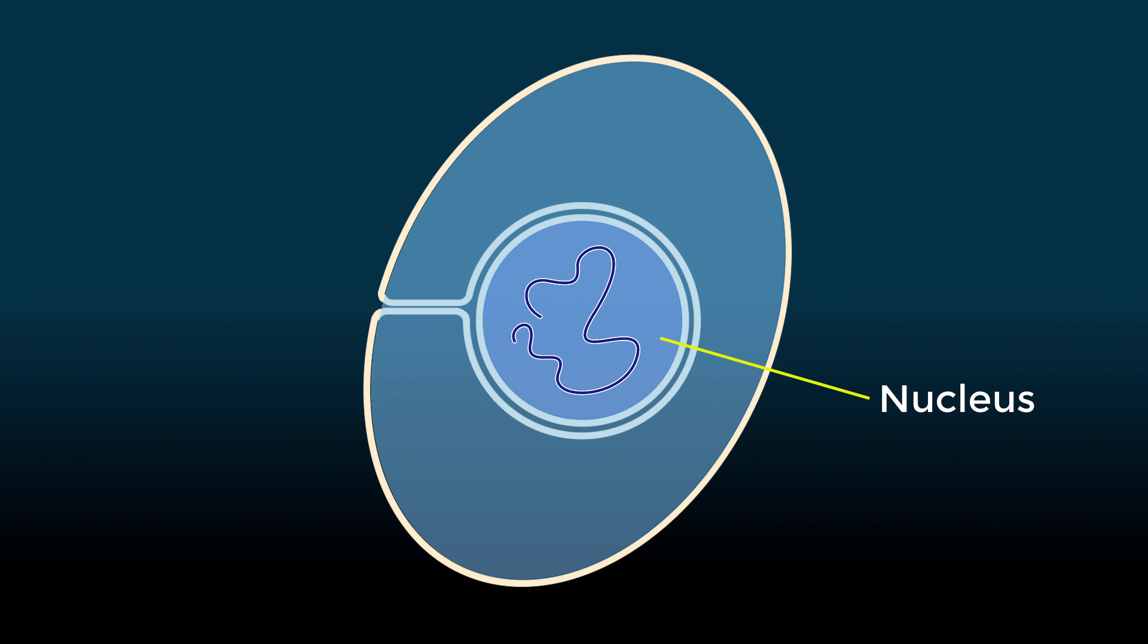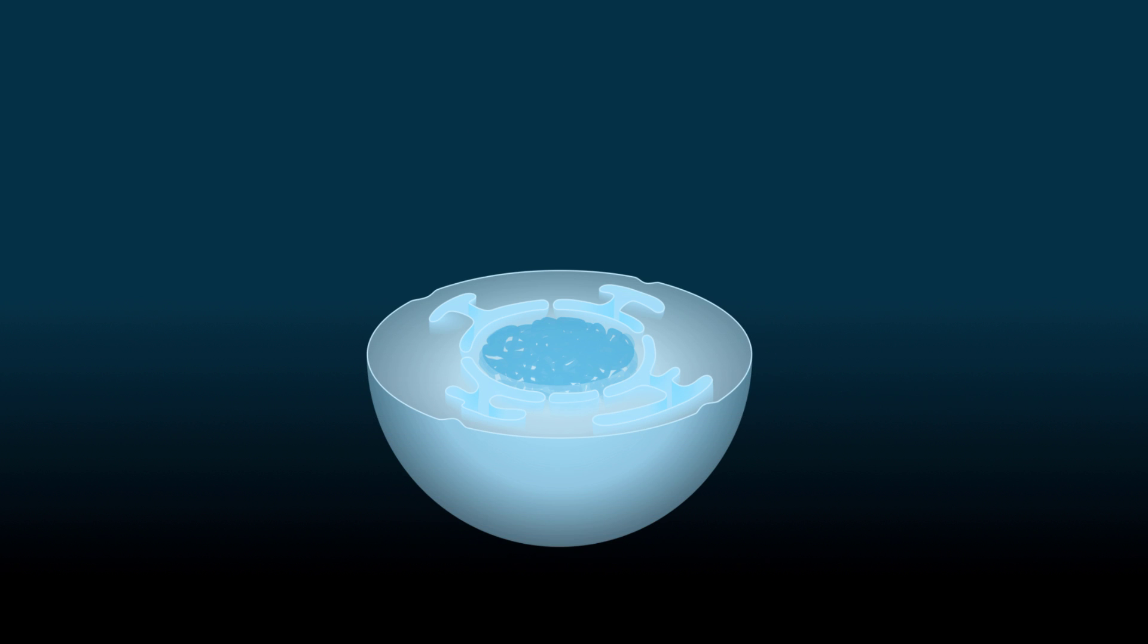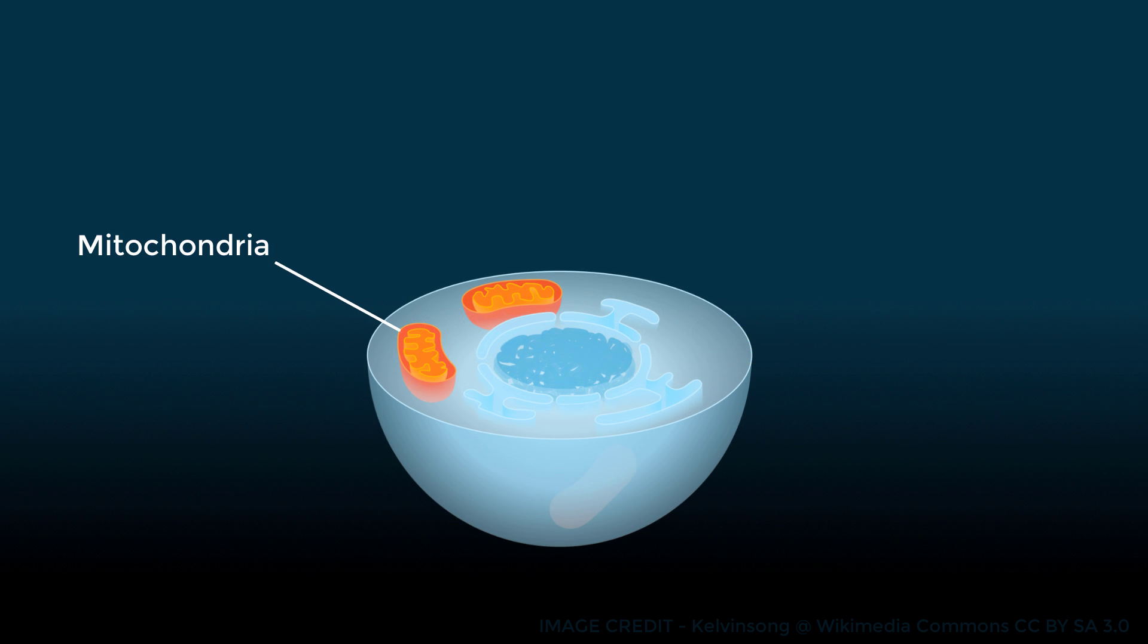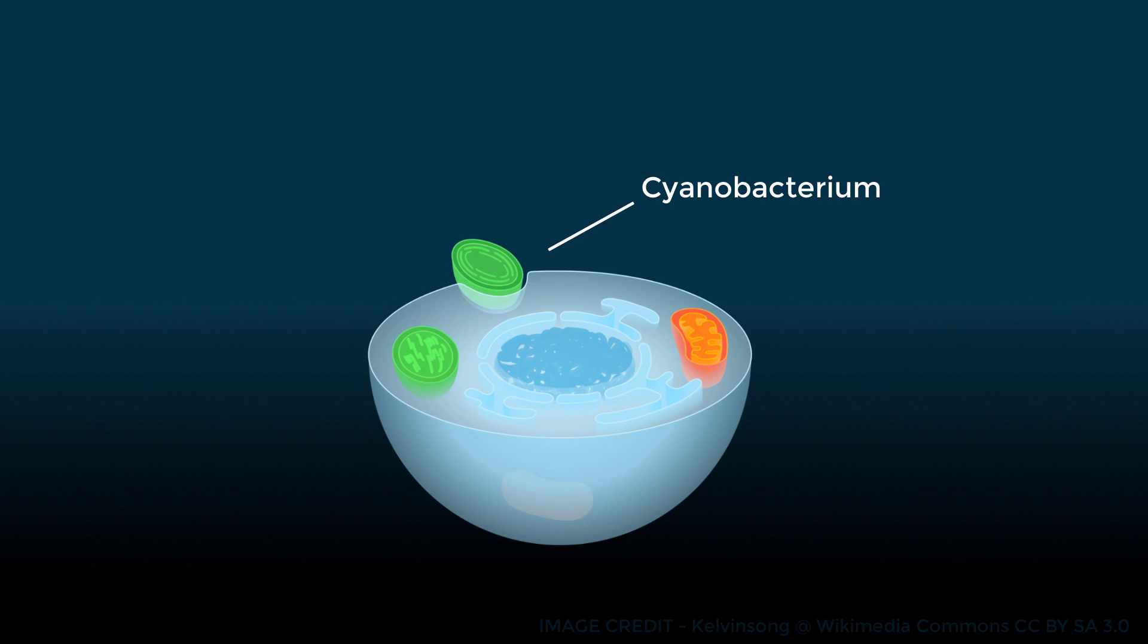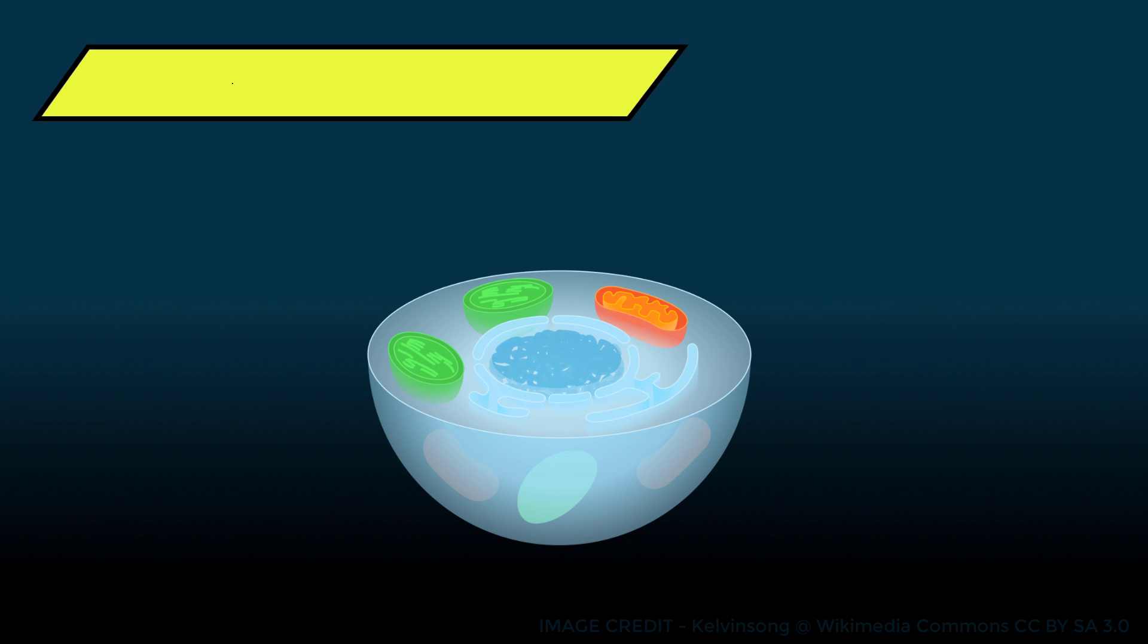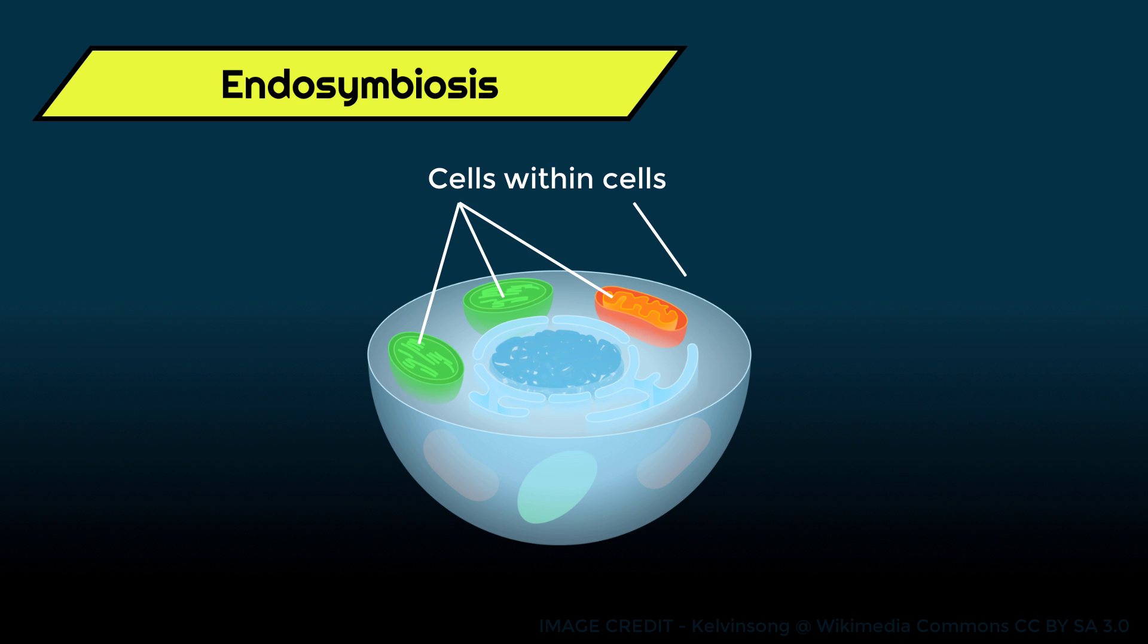Other important processes to be compartmentalized are those related to energy production. And this is where interesting developments took place early in the evolution of eukaryotes: the assimilation of other microbes to act as a kind of household servant. Oxygen-burning microbes were turned into the internal power plants known as mitochondria. Photosynthesizing microbes became the chloroplasts inside the cells of plants and algae. This phenomenon is called endosymbiosis.